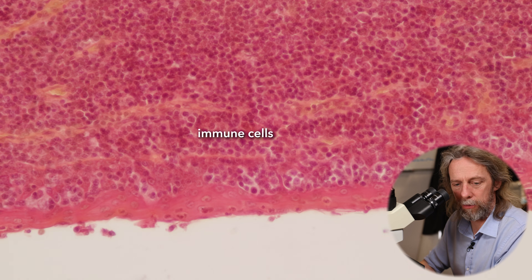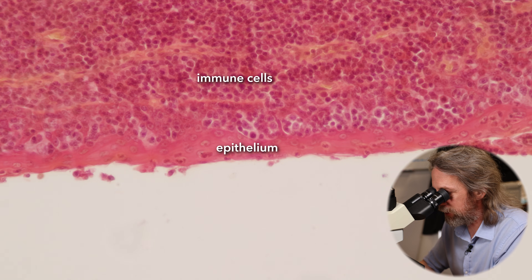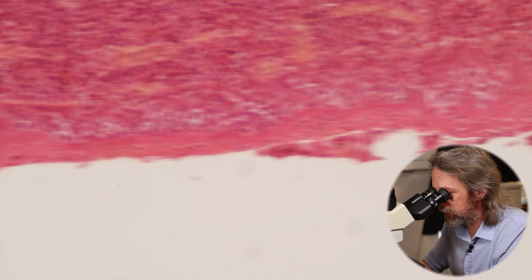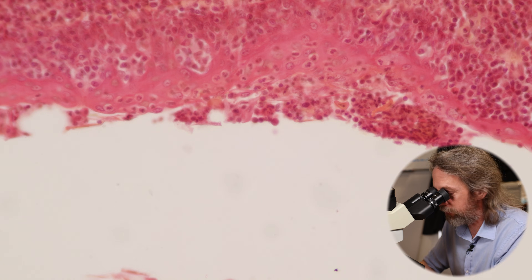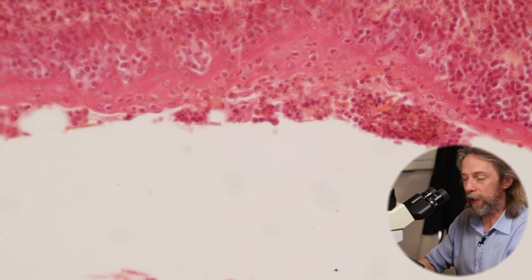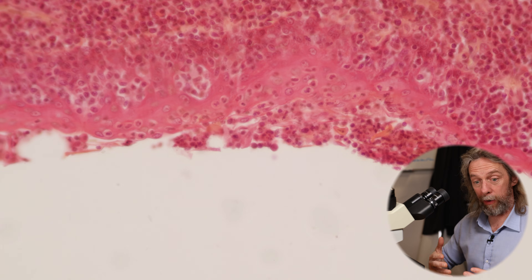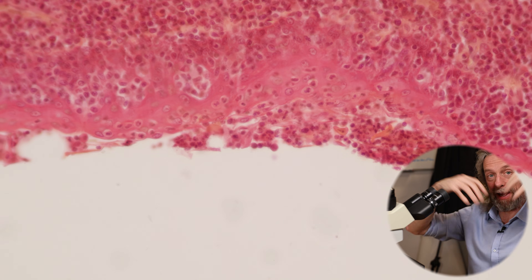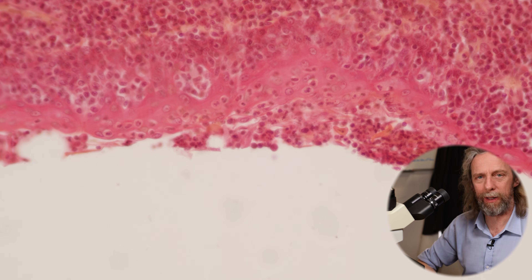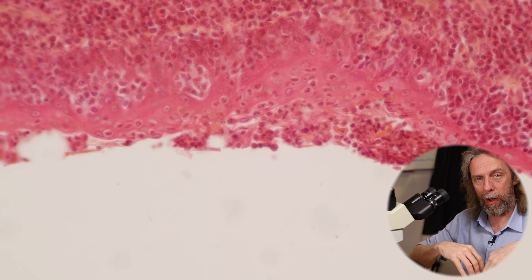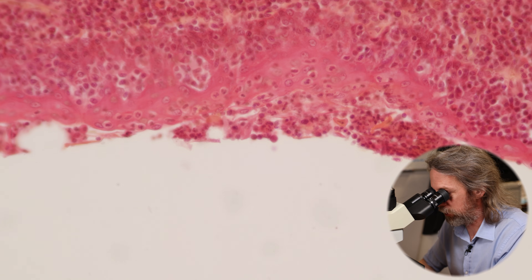We've got immune cells on one side, and that epithelium looks pretty thin — it has been infiltrated by lymphocytes — and then in the lumen there we're seeing debris. That's the tonsil doing its job. Those tonsillar crypts are great because they give more surface area, letting debris and pathogens from the oral cavity and nasal cavity get deep into the tonsil where the lymphocytes can fight the infection.